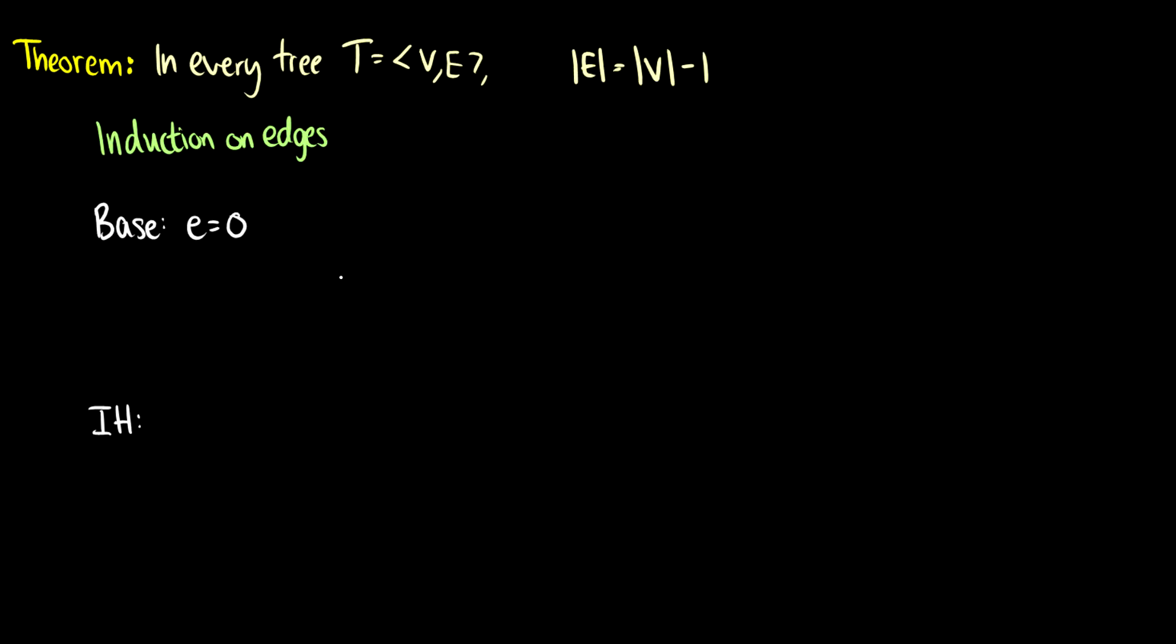So there's no edges. What does that mean? That means that there is one vertex. So this is the tree. That is our tree for 0 edges. Now we can see here that 0 is equal to the number of vertices minus 1, which is just 1 minus 1. So the base case holds.